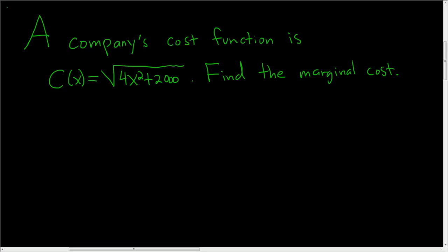A company's cost function is given by this formula, c of x, and we're asked to find the marginal cost. The marginal cost is simply the derivative of the cost function.